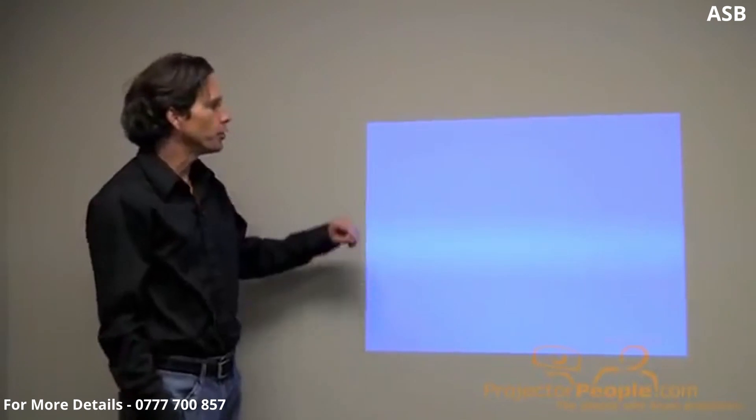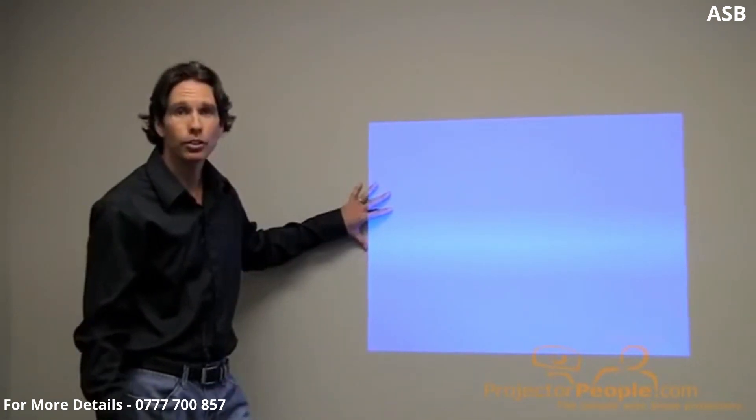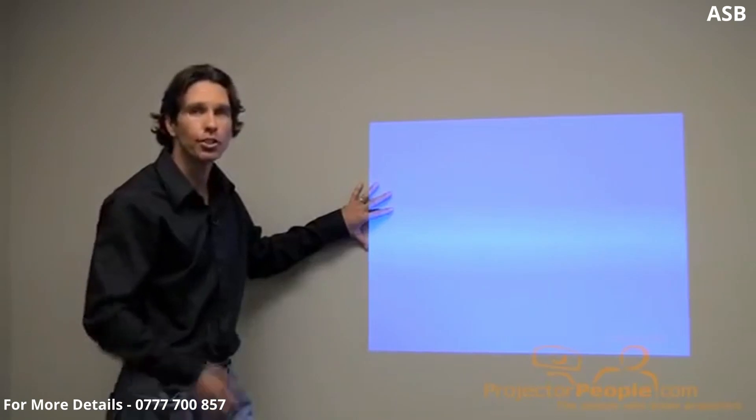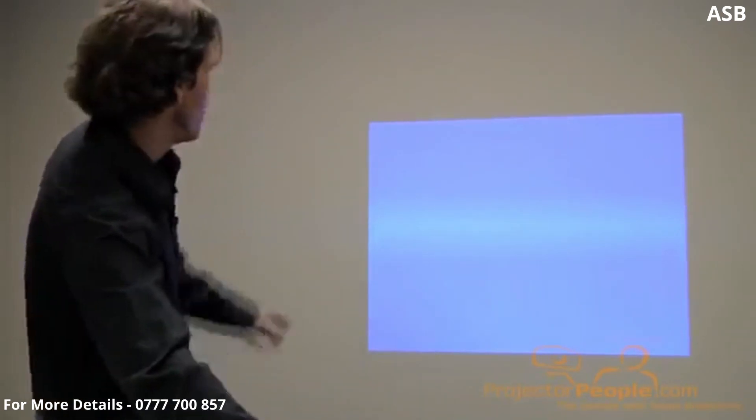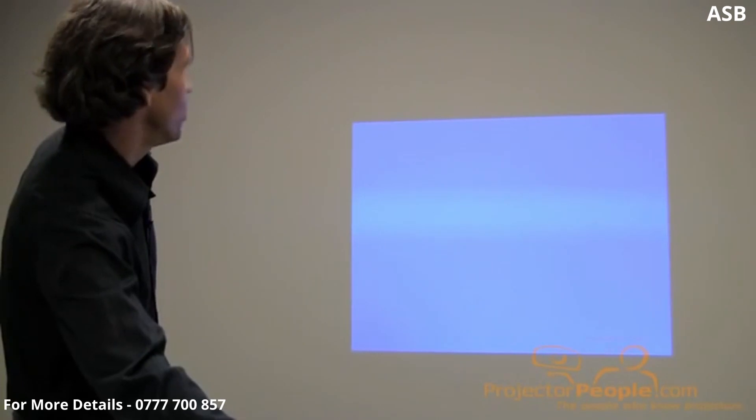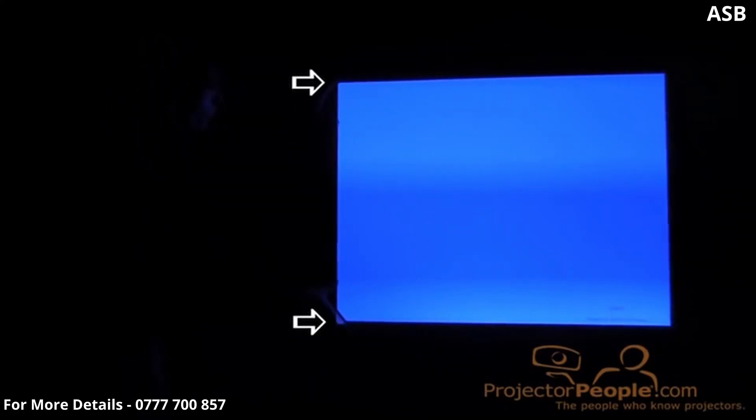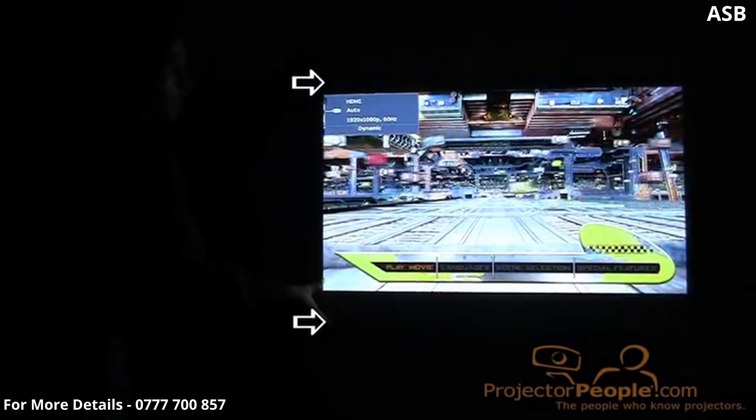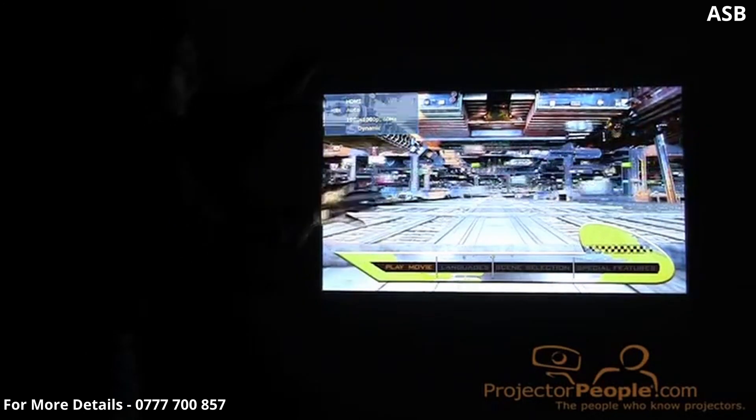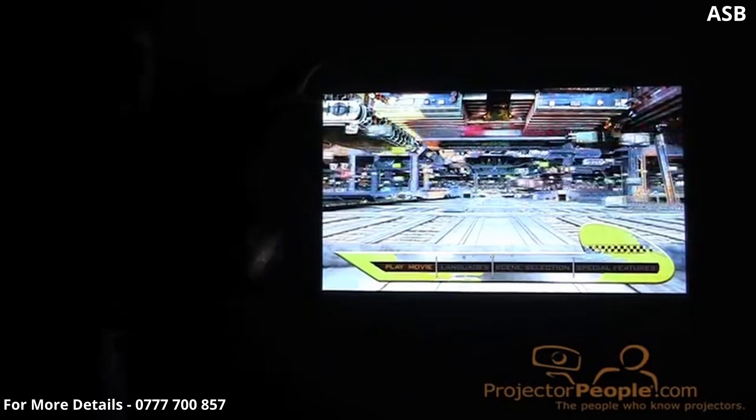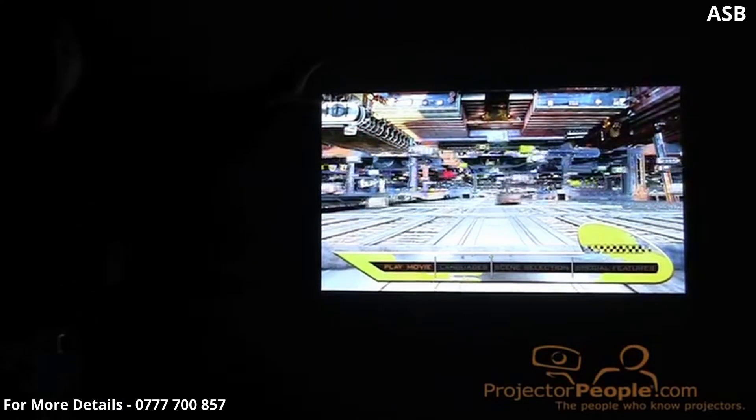What we're going to do is show you real quick what a 16:9 signal looks like coming through a regular 4:3 projector, just so you understand that it can handle different aspect ratios and resolutions. So as you can see, you've got your 4:3 aspect ratio up there right now. We're going to send a 16:9 movie. Now we're going to get the movie in there. Remember you've got your 4:3 right now. Now when the movie pops in... boom. Now you've got your 16:9 inside the 4:3. This little 4:3 projector can handle it. We just wanted to give you an idea of what it looks like with different aspect ratios and resolutions.